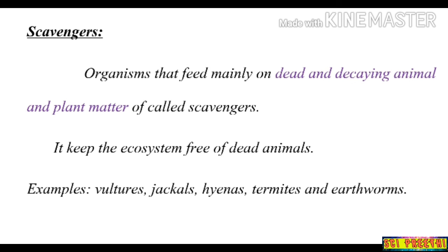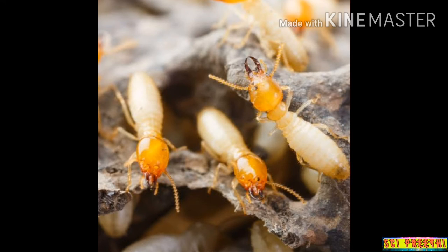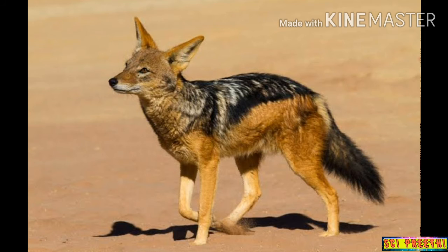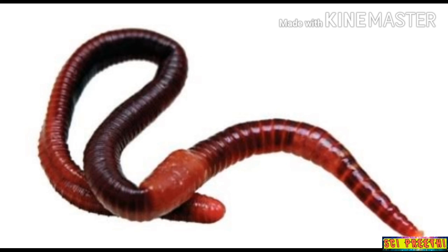Examples of scavengers include vultures, jackals, hyenas, termites, and earthworms. This is a picture of a vulture eating dead animal matter. The insect shown is a termite, and the other animals shown are jackals and hyenas. These are all examples of scavengers.